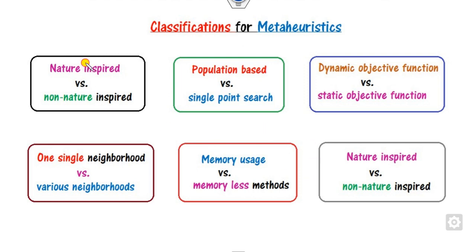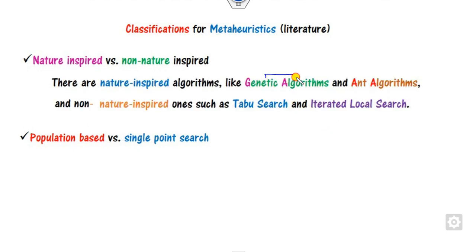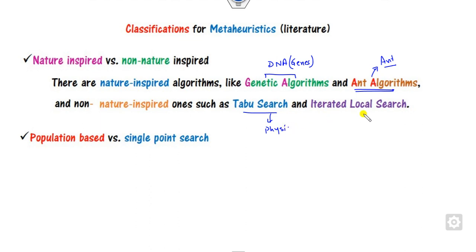What are the classifications of meta-heuristic techniques? They are classified as: nature-inspired versus non-nature-inspired, population-based versus single-based, dynamic versus static, single versus variable neighborhood, and memory-based versus memory-less. Nature-inspired algorithms are inspired from nature, like the genetic algorithm inspired from human genes, or the ant algorithm inspired from the behavior of ants. Non-nature-inspired algorithms include taboo search, which is based on physics backgrounds or local search.